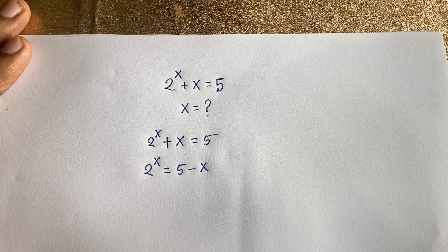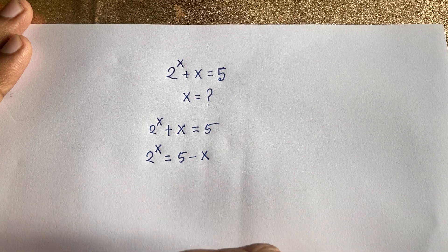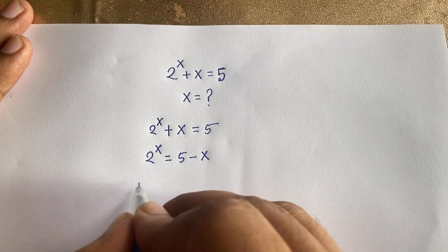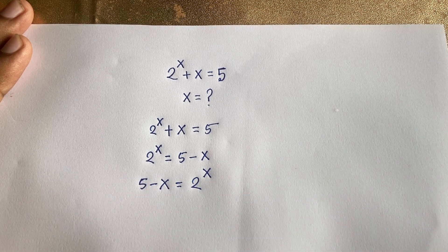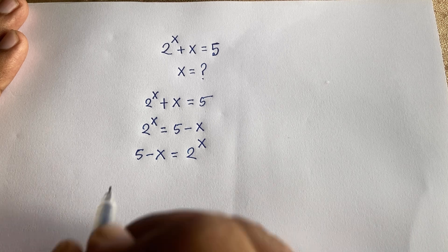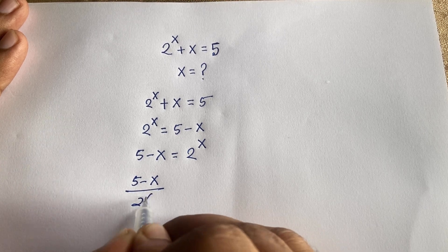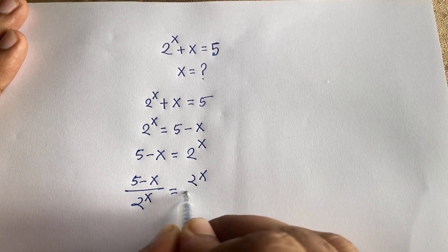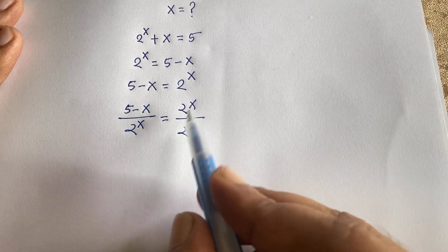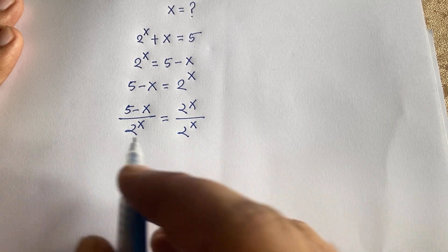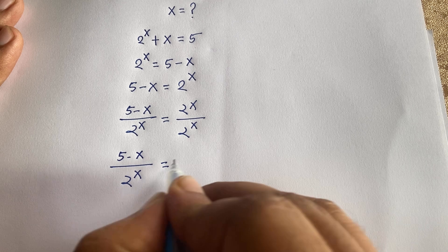So here we have 5 minus x and 2 to the power of x. I just change the placement. Now if I divide both sides by 2 to the power of x, we get: 5 minus x divided by 2 to the power of x equals 2 to the power of x divided by 2 to the power of x. The 2^x terms cancel, giving us 1. So (5 minus x) over 2 to the power of x is equal to 1.